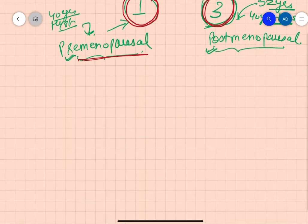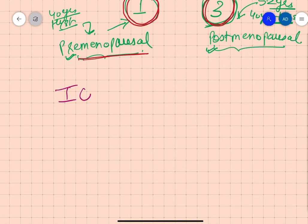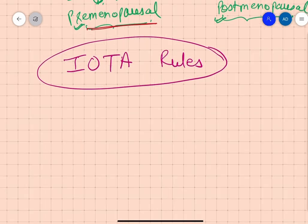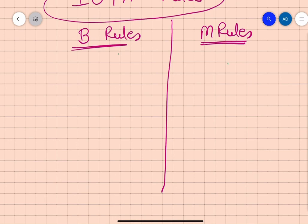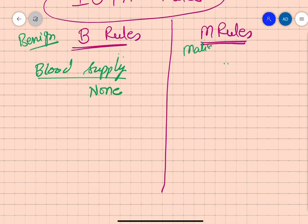Now let's talk about IOTA rules. IOTA stands for International Ovarian Tumor Analysis Group. They gave two types of rules: B rules (benign) and M rules (malignant). Looking at blood supply on ultrasound: if there is no blood supply, it comes under B rule; if there is increased blood supply, it is suspicious of malignancy and comes under M rule.